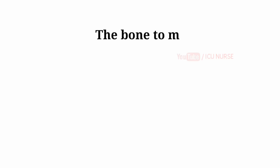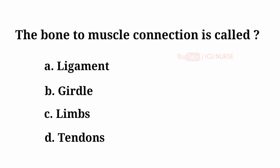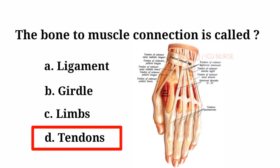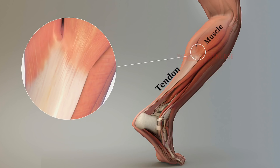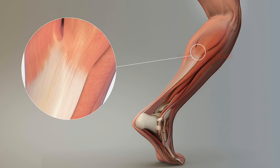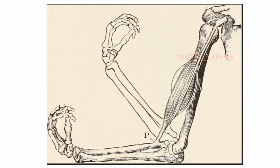The bone to muscle connection is called: A. Ligament, B. Girdle, C. Limbs, D. Tendons. And the answer is D. Tendons. The bone to muscle connection is called tendons. A tendon attaches muscle to bone. They help to move the bone or structure and also help in withstanding tension.